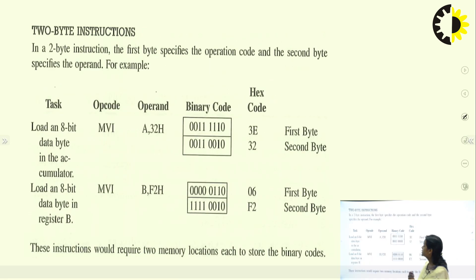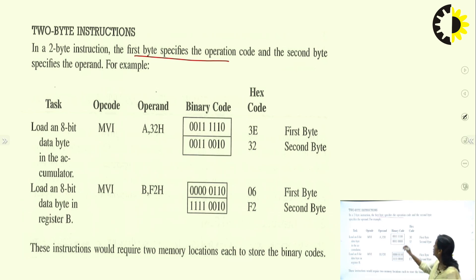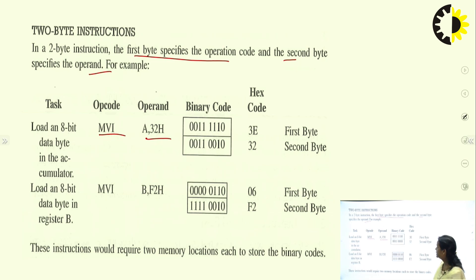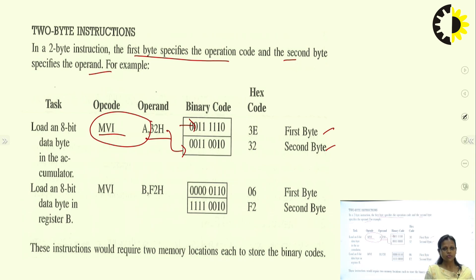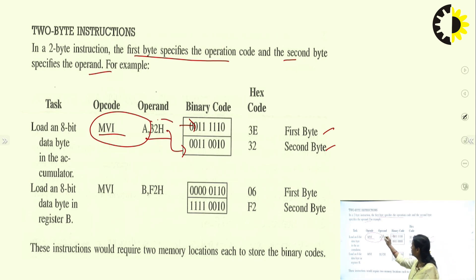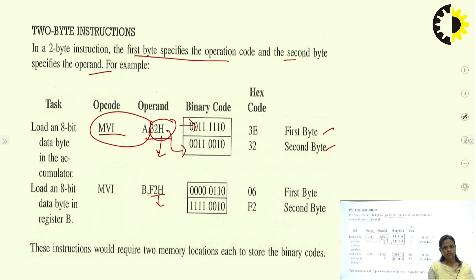Next is the two-byte instruction. The first byte specifies the operation code and the second byte specifies the operand. An example is MVI A, 32H. Here, the binary code for MVI A is the first byte and the binary code for 32H is the second byte. Such instructions require two memory locations. Whenever you see one byte of data with the instruction — for example, 32H or F2H — it means this is a two-byte instruction.